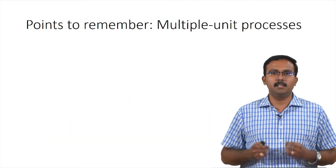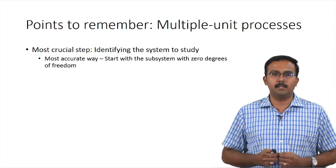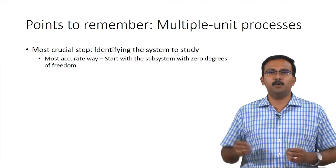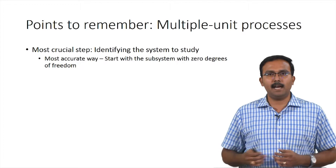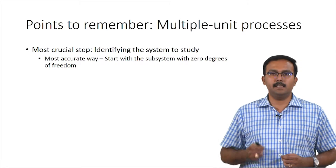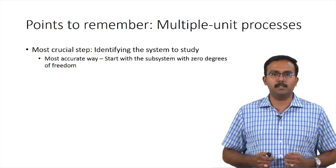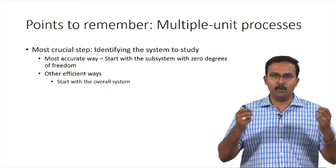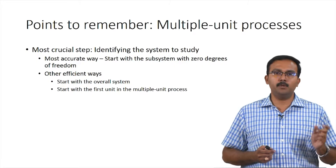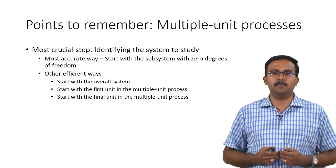When talking about multiple unit processes, the important concept to learn and master is to identify which system to start with. The most accurate way is to divide the entire process into sub-units and perform a degree of freedom analysis to identify which system has zero degrees of freedom and start calculations from there. However, this is extremely tedious and time consuming. More efficient ways would be to start with the overall system as a single unit, or start with the first sub-unit, or start with the final sub-unit.